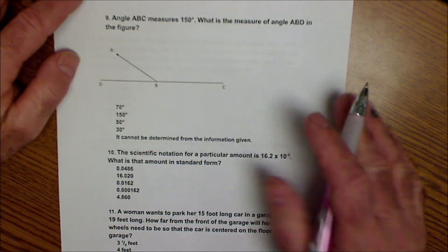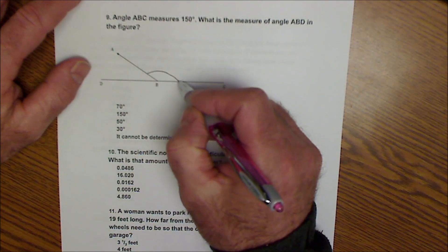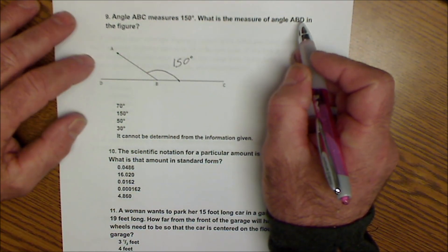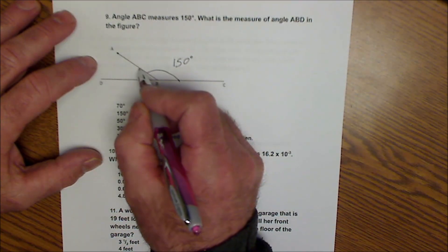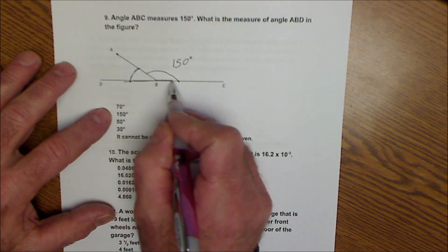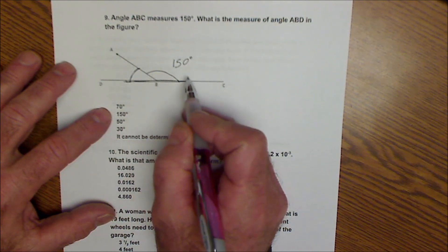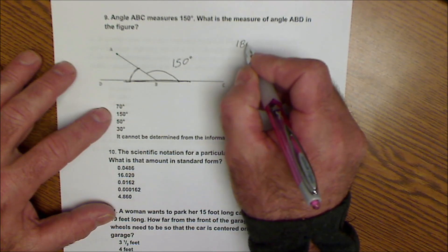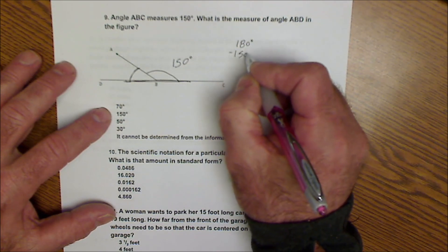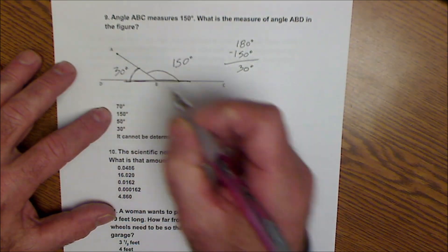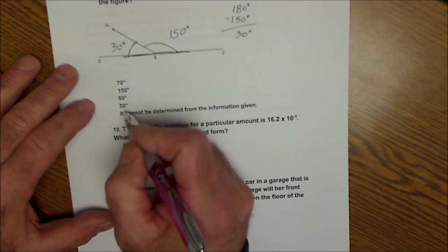All right. Hopefully this is helping. Angle ABC measures 150 degrees. What is the measure of ABD? Angle ABD is this angle here. This is a linear pair, like I talked about earlier. The sum of these two is 180. So 180 degrees minus 150 degrees gives me 30 degrees. Or the measure of ABD is 30 degrees.